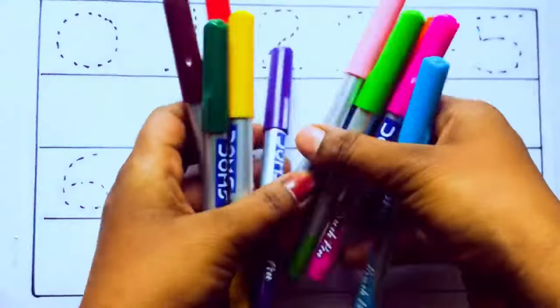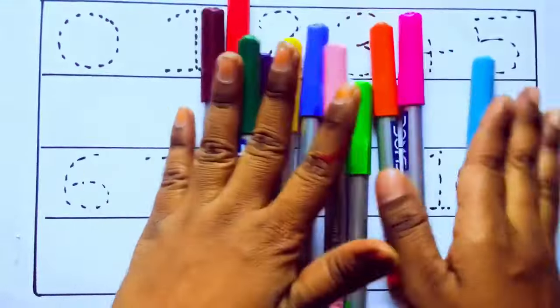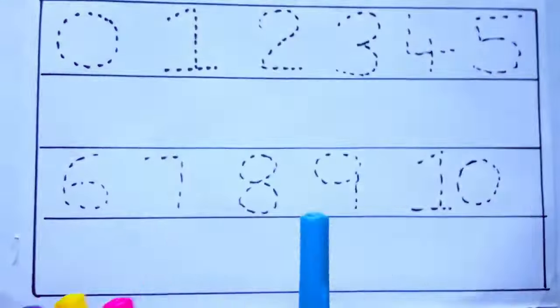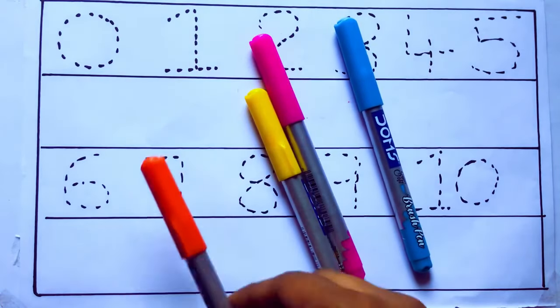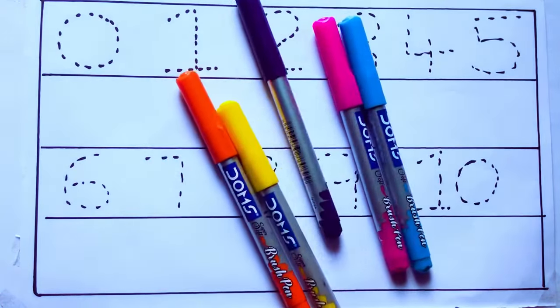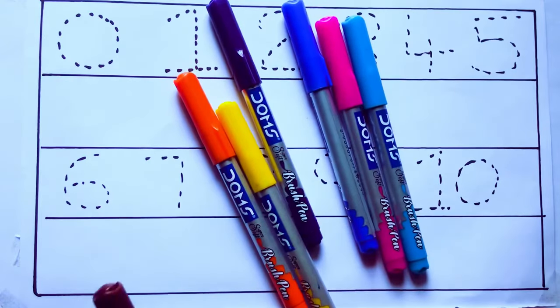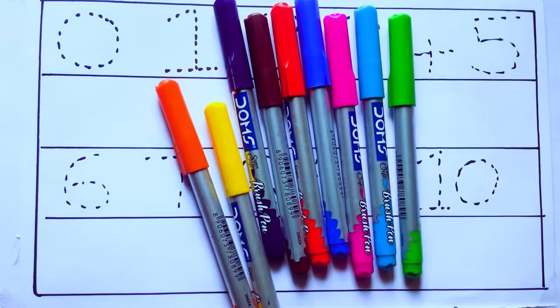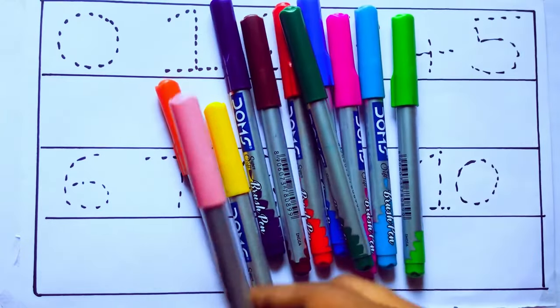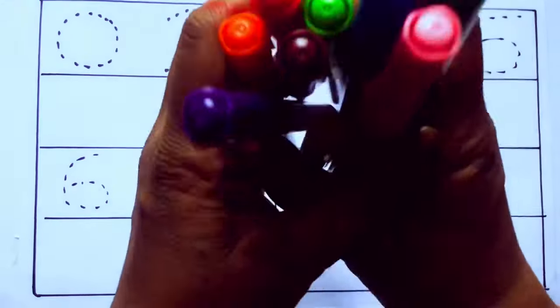Let's learn some colors. These are all the color pencils. Let's learn the names: sky blue color, pink color, yellow color, orange color, violet color, blue color, brown color, red color, green color, and pink color.